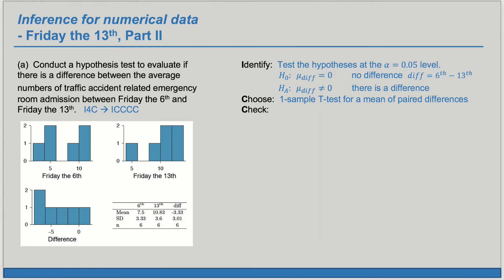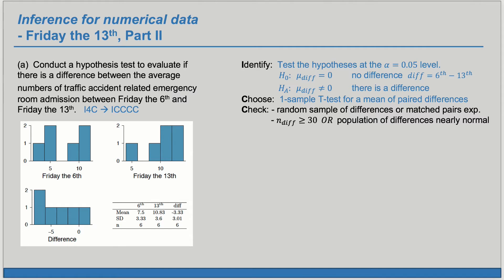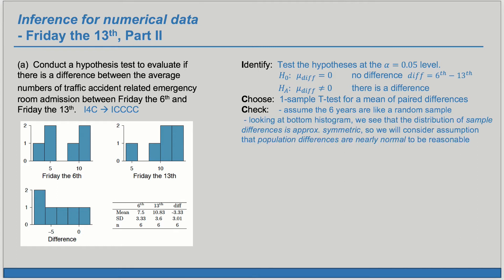Check — we need to verify that the conditions are met. We need a random sample of differences or a matched pairs experiment. Here we'll have to assume that the six years are like a random sample, and we'll keep that consideration in mind when assessing the validity of our conclusions. Next, we need at least 30 differences or the population of differences to be nearly normal. Looking at the bottom histogram, we don't have a lot of data, but the distribution of sample differences is approximately symmetric, so we'll consider the assumption that the population of differences is nearly normal to be reasonable.